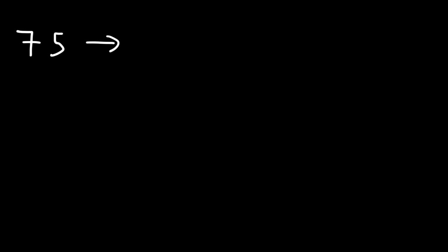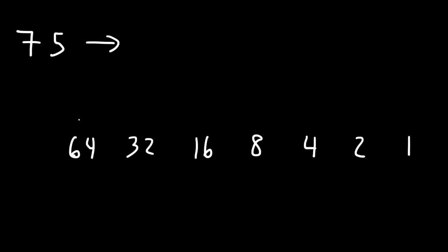It helps to be familiar with the powers of 2. 2 to the 0 power is 1. 2 to the 1st power is 2. 2 to the 2nd power is 4. 2 to the 3rd power is 8. 2 to the 4th power is 16. 2 to the 5th power is 32. 2 to the 6th power is 64. 2 to the 7th power is 128. We don't need to go further because 128 exceeds 75.